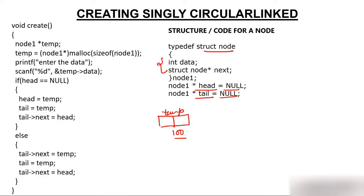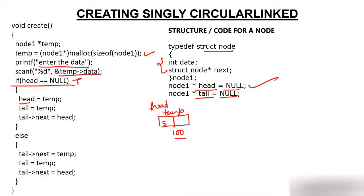A node is created, its name is temp, address is 100, and there is nothing inside the node yet. Now if head is equal to null — yes, currently head is null because we initialized it with null — condition is true, so we go inside. Head = temp, so head now has 100 and this node becomes head. Tail = temp, so tail also has 100. Then tail->next = head, which is 100, so this node starts pointing to itself — meaning there is a circular structure.